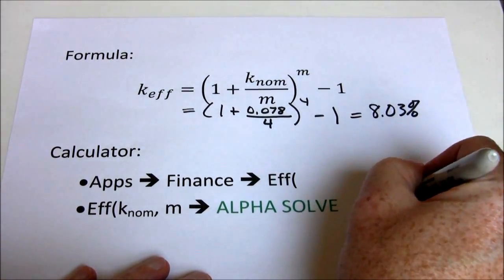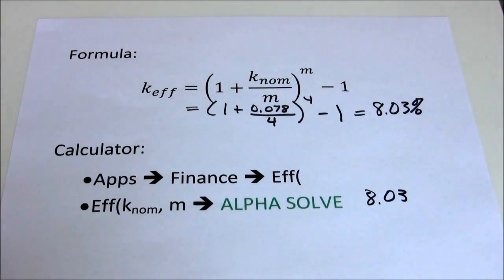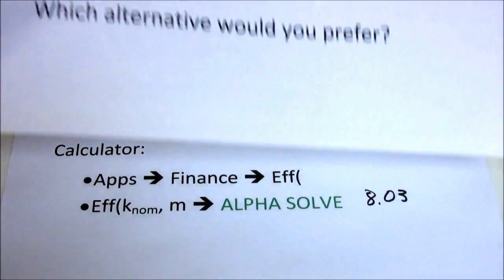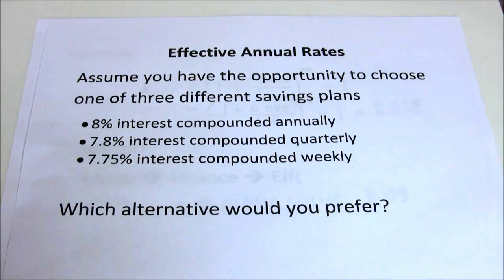Now what I'd encourage you to do is go ahead and solve for the effective annual rate of 7.75% compounded weekly. Just real quick, let me give you the check figure for that.